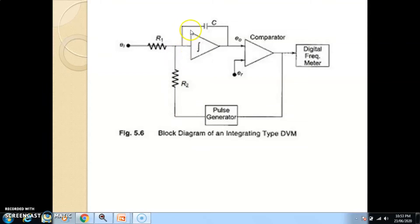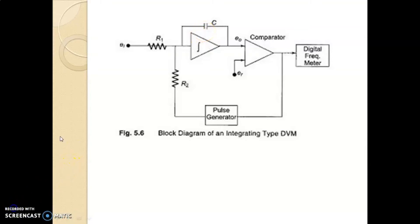These pulses are again fed back to the integrator. As the capacitor is already charged, when the pulses generated from the pulse generator are applied to the integrator, the capacitor starts discharging. As the capacitor completely discharges — that means it goes to zero — again a new ramp will be generated. In this way, the comparator will continuously change state.